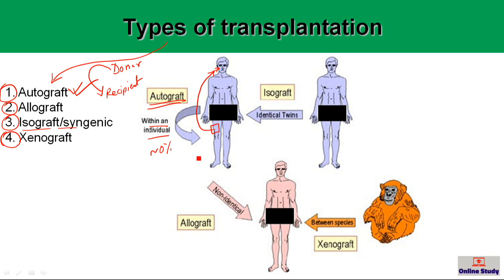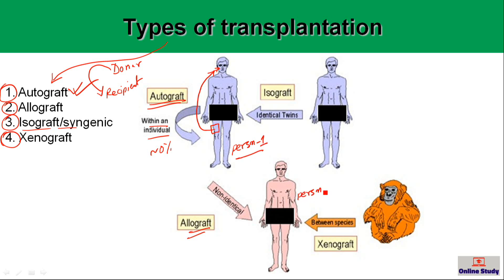An allograft is when an organ or tissue is removed from one person and placed into another person of the same species — for example, human to human. In this case, the donor and recipient are different in terms of their immunological background. More specifically, these two people have different major histocompatibility complex (MHC) genetics on the surface of every cell. So when the graft is transplanted, the chance of rejection is highest.